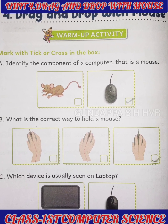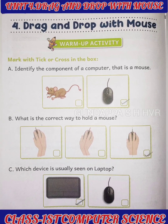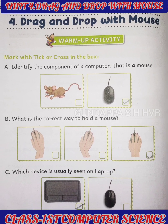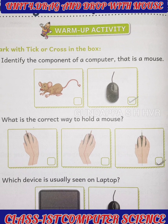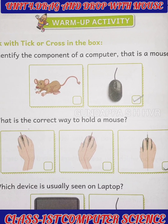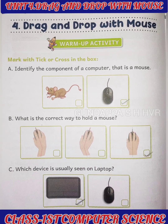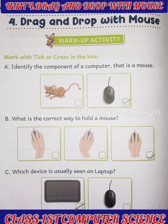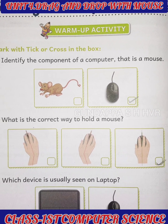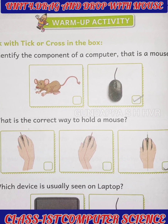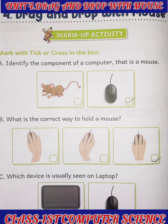They gave two pictures here. First one is also a mouse but it comes under the animal category. The second one is the computer mouse — that is the part of a computer. So you must put a tick mark for the second picture. Next, question B: what is the correct way to hold a mouse? You must hold a mouse in a proper way so that you can work easily. The first and second options shown are wrong. The correct way is to place your first finger on the left button and your second finger on the right button.